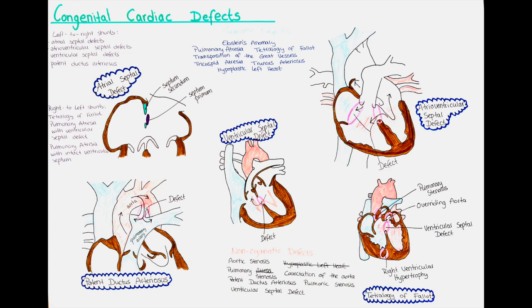An ostium primum atrial septal defect is usually located at the most inferior and anterior aspect of the septum and is often associated with trisomy 21. There is usually a left-to-right shunt without pulmonary vascular disease, resulting in volume overload of the right side of the heart and pulmonary over-circulation. Children with smaller defects are usually asymptomatic, especially when there is no concomitant mitral regurgitation, while patients with significant pulmonary oversupply are more likely to develop heart failure during infancy.